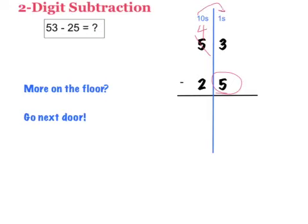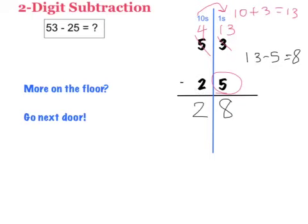I'm going to bring that 10 over to the ones place. If I add 10 to 3, I get 13. So 3 becomes 13. Now I do not have more on the floor because I now have 13 minus 5, which equals 8. 13 minus 5 equals 8, and 4 minus 2 equals 2. That means that 53 minus 25 equals 28.